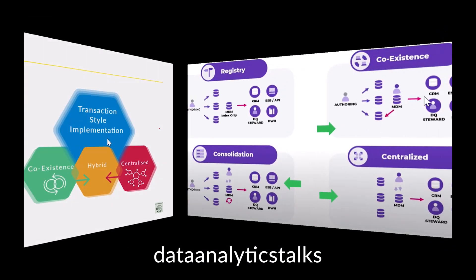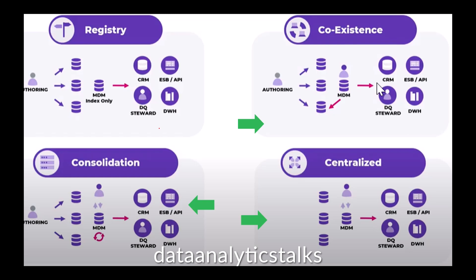In the coexistence style, the master data entity coexists in both the hub and the source systems with two-way synchronization between the two. Master data entities can be created or updated either in the hub or the source system. The MDM hub standardizes, cleanses, enriches, and deduplicates the master data and pushes the data back to the source systems. This MDM system is managing cleanliness, enrichment, and deduplication of the master data.